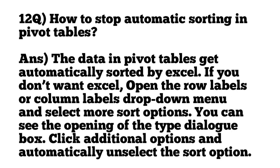How to stop automatic sorting in pivot tables? The data in pivot tables get automatically sorted by Excel. If you don't want Excel to do so, open the row labels or column labels drop-down menu and select more sort options. You can see the opening of the sort dialog box. Click additional options and automatically unselect the sort option.